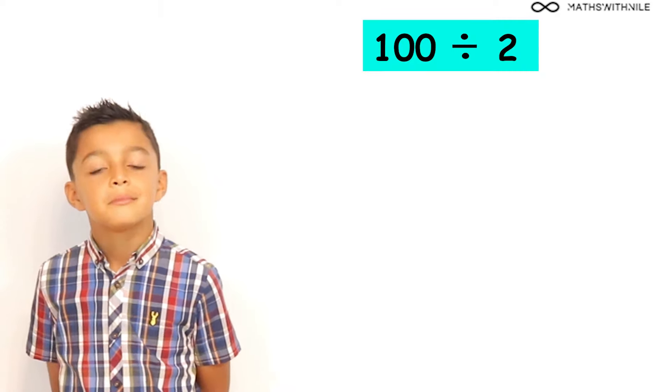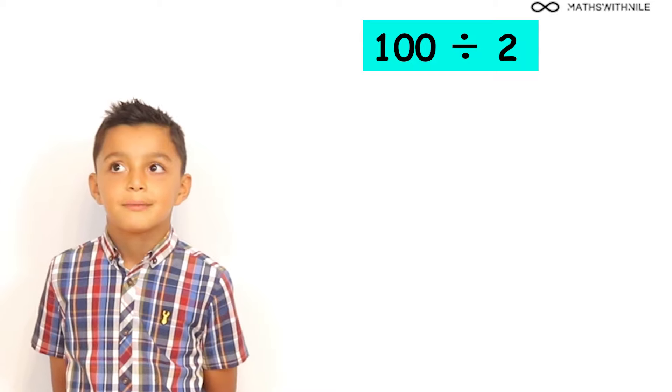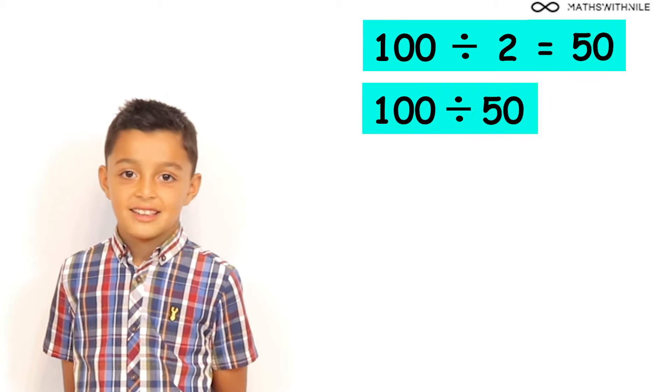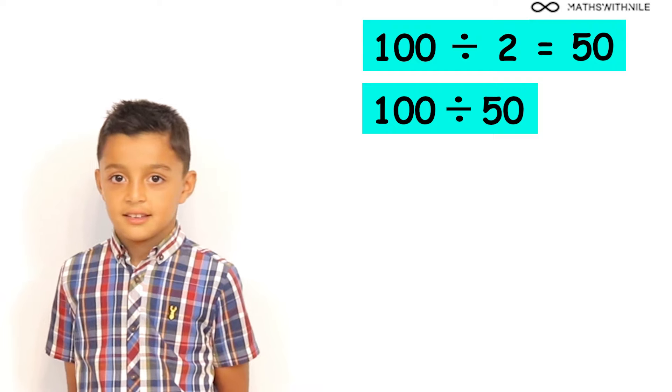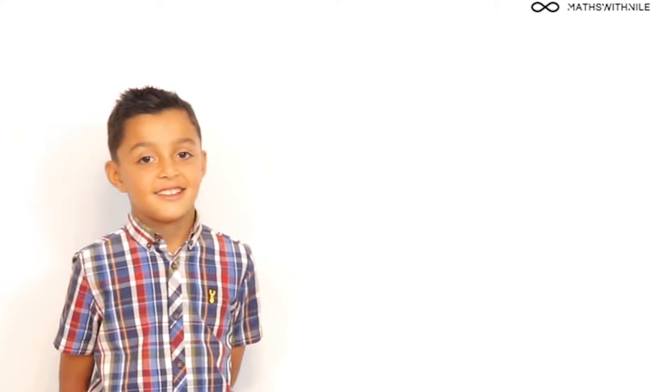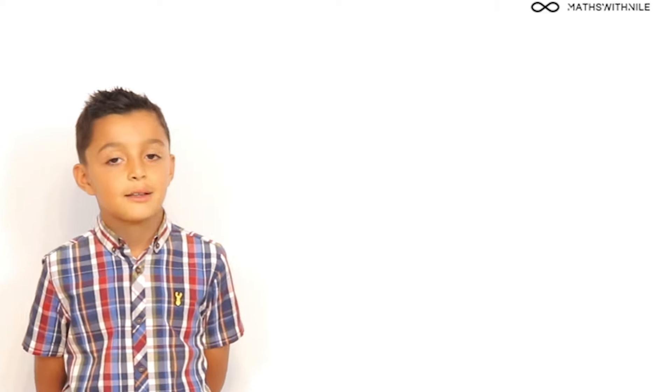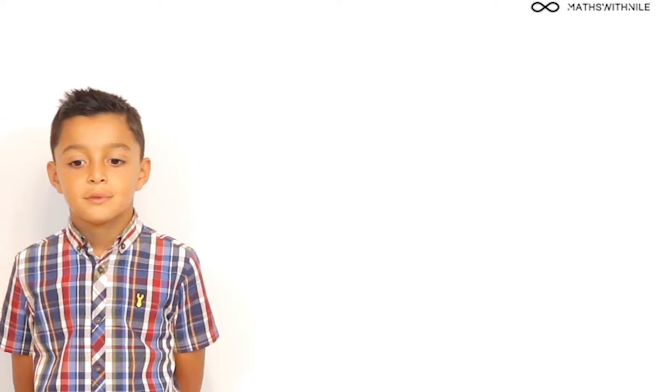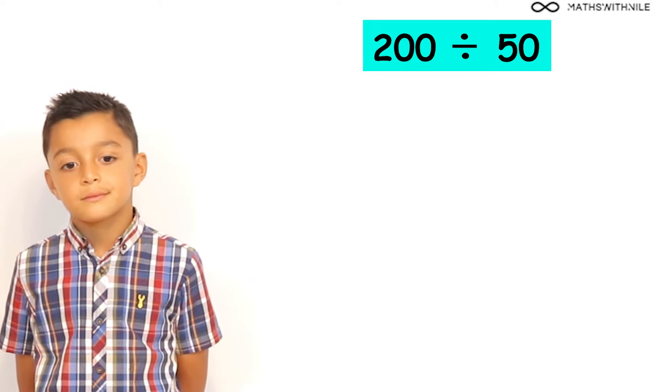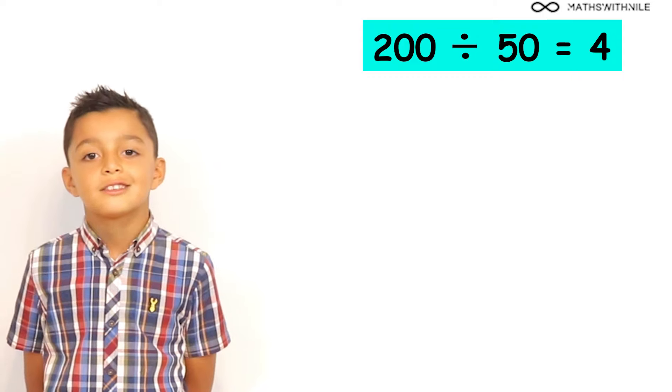What is 100 divided by 2? 50. What is 100 divided by 50? 2. Good. Okay. So, if there are 2 lots of 50 in 100, how many lots of 50 will there be in 200? So, the question is 200 divided by 50. 4. Very good.